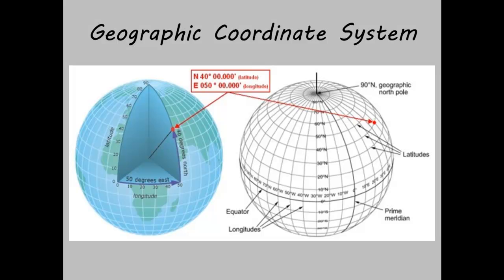To begin, let's clarify the difference between the two coordinate systems. When we talk about a geographic coordinate system, or GCS, we are talking about using a three-dimensional spherical surface to define locations on the Earth. To put it more simply, a point is referenced by its longitude and latitude values.